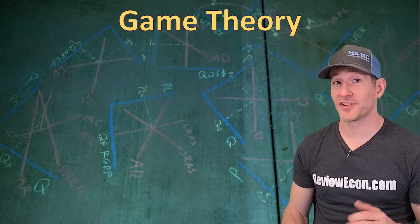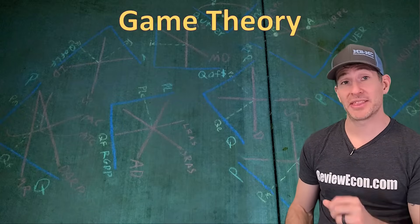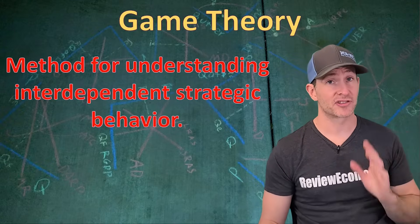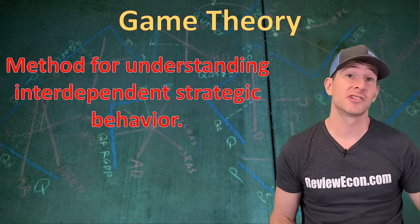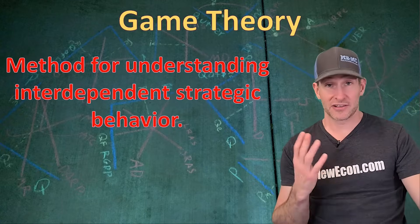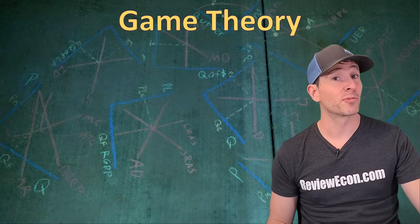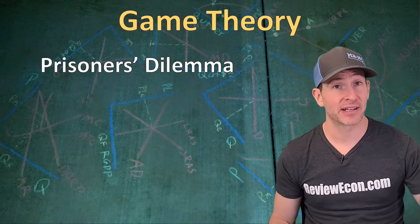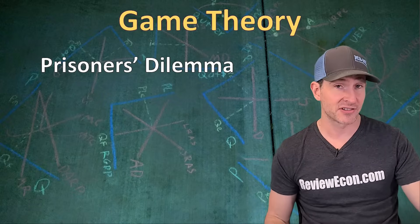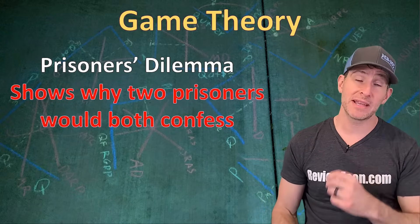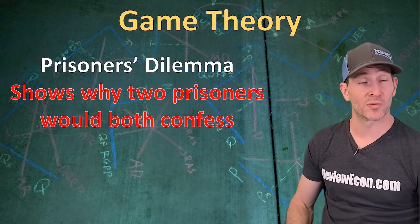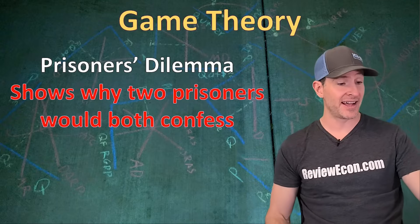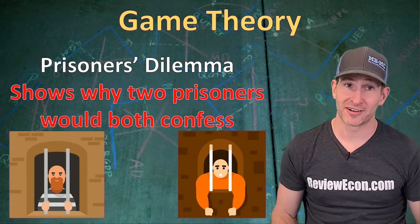When it comes to oligopoly behavior in AP microeconomics, game theory is how we understand it. Game theory is a method for understanding interdependent strategic behavior — in this case, strategic behavior between small numbers of firms. In your psychology class, you may learn about the prisoner's dilemma. It is one of the ways that people teach game theory. Game theory has applications across all different disciplines, and the prisoner's dilemma shows why it might be impossible for two prisoners to work together when it's in their best interest to do so. Instead, both will likely confess and as a result, both will end up in prison for a very long time.